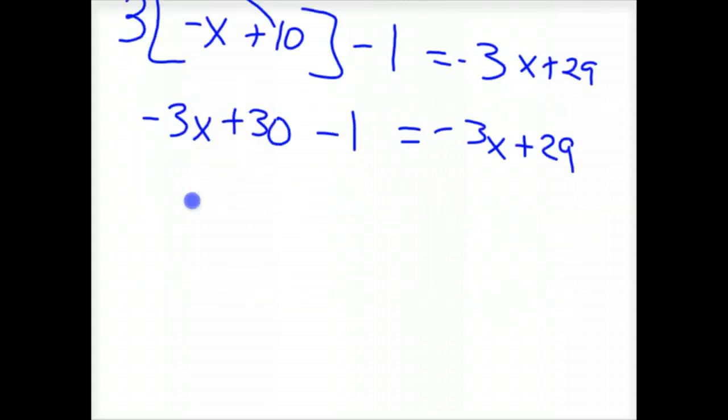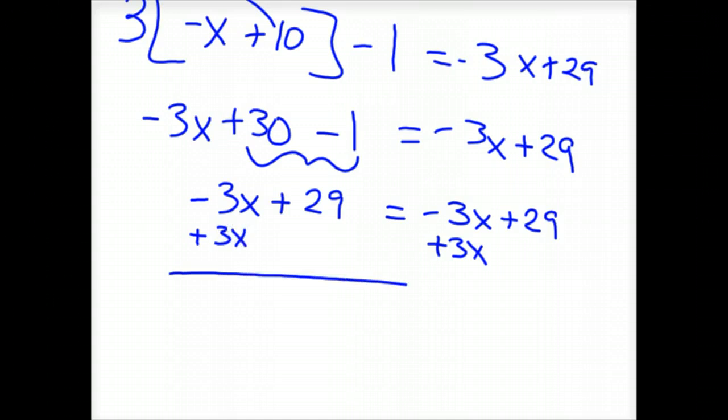And you keep going. So -3x minus 1 is 29, minus -3x + 29. And notice we've got the same thing on the left and the right. So if we were to add 3x to both sides to get an x to the left, you would have 0 and then you'd have 29 equals 29.